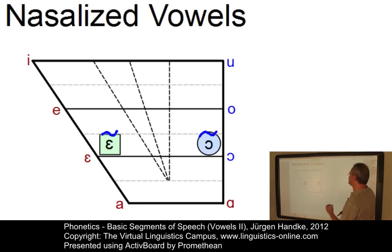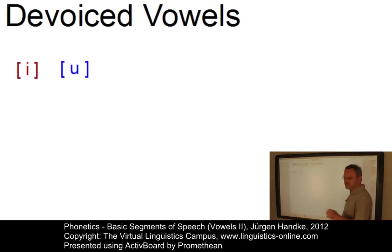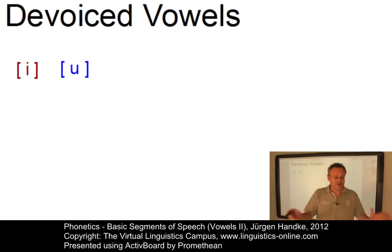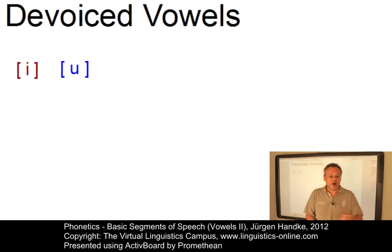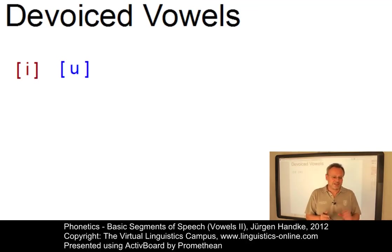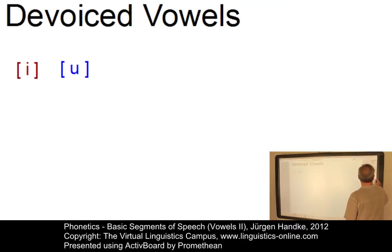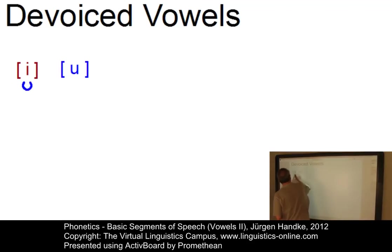Another possibility of classifying vowels is in terms of voicing. Normally vowels are voiced — that is, the vocal folds vibrate. However, there are languages where we can find voiceless or whispered vowels. In Japanese, the vowels 'i' and 'u' are often devoiced or voiceless, especially when they occur in a syllable-final position or after voiceless fricatives. The diacritic used to indicate devoicing is a circle underneath the vowel as a subscript.